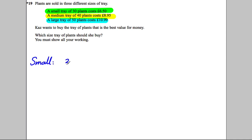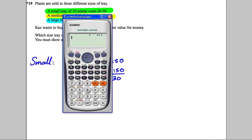So how much, if 30 plants cost £6.50, how much does one plant cost? Well, it must be £6.50 divided by 30. So you could get your calculator out and do £6.50 divided by 30, and you would get yourself 0.216 recurring.